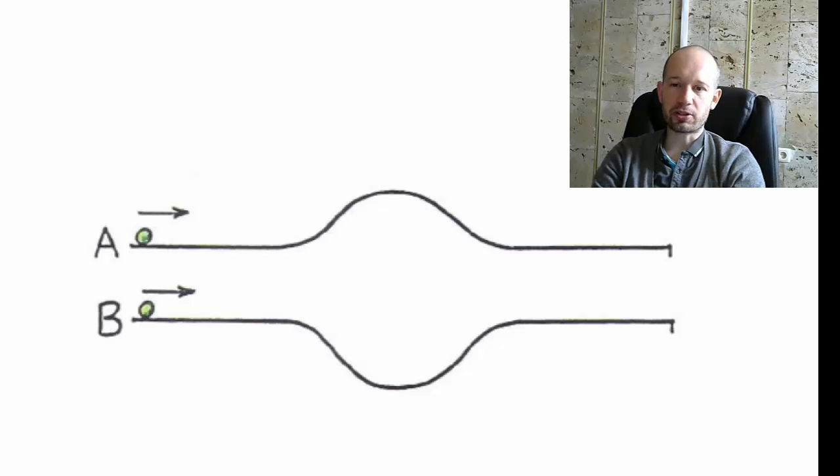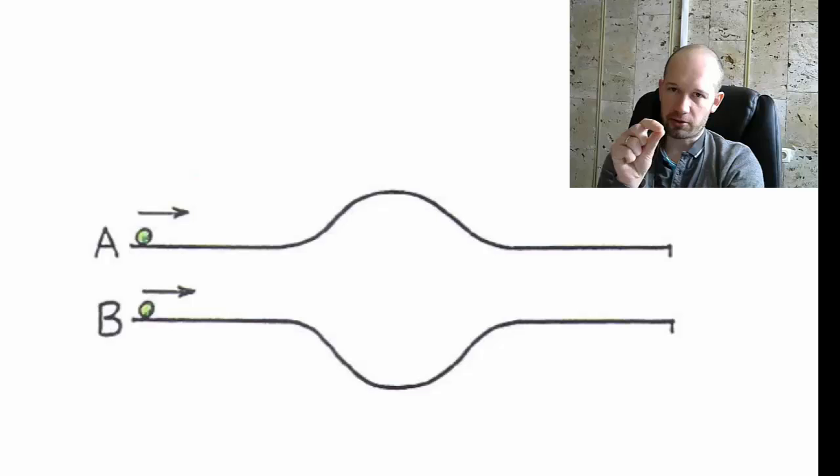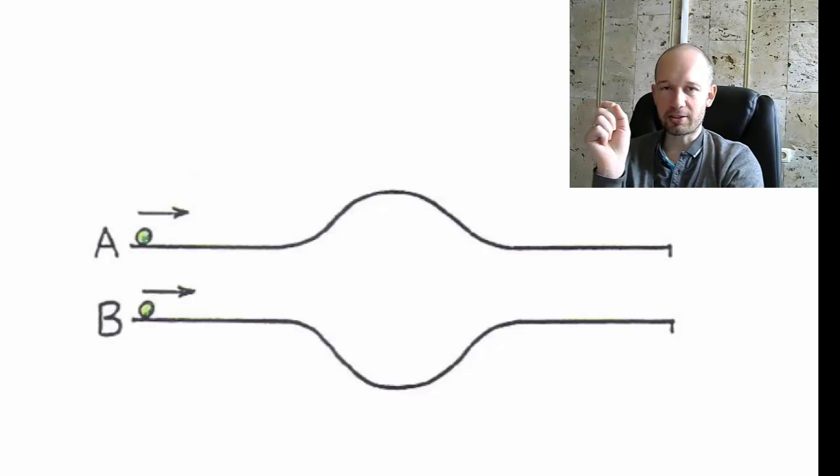And we're answering questions about basically how these two balls are moving along these two tracks. And you can see that on one of the tracks, on track A, there is a bump, so a little hill that the ball will have to travel up and then come down.